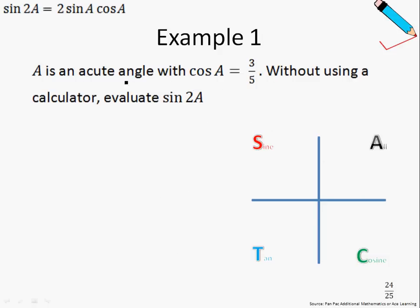In example number one, A is an acute angle. For those of you who have forgotten what's an acute angle, an acute angle is an angle that is less than 90 degrees, between 0 to 90 degrees rather. With cosine A equals 3/5, without using a calculator, evaluate sine 2A. If A is an acute angle, then using our ASTC diagram, this should be my angle A. Since the cosine of A is 3/5, remember that cosine A is adjacent over hypotenuse, which is 3/5. Using Pythagoras theorem, we can work out that the opposite is just 4.